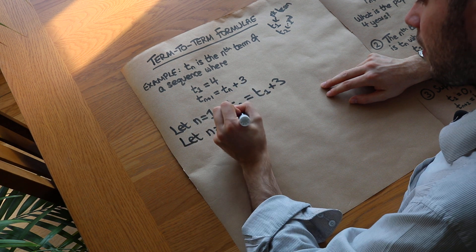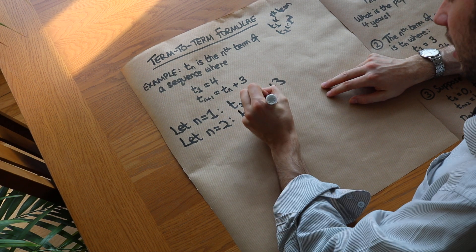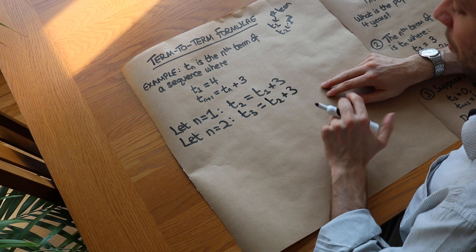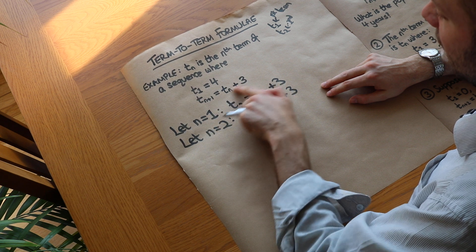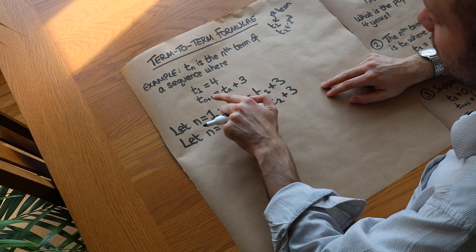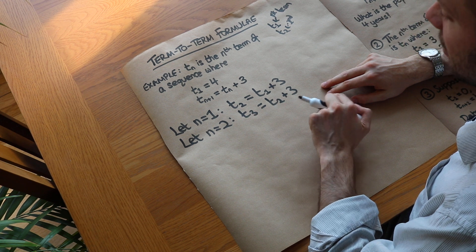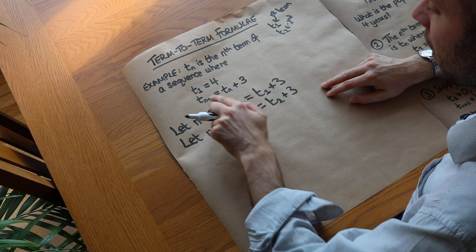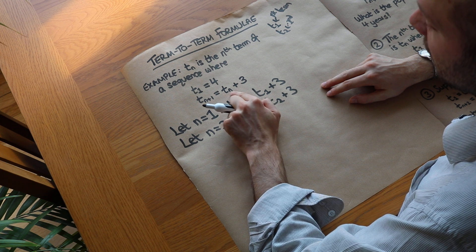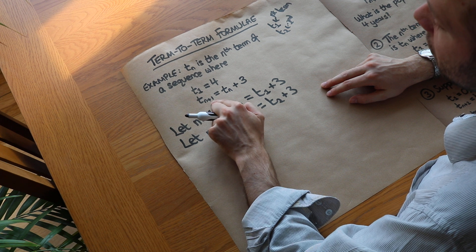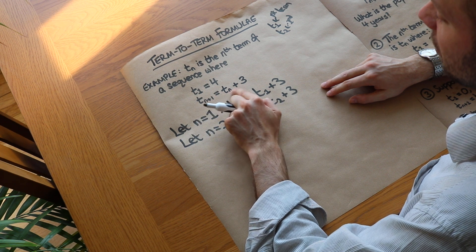If we let n equal to two, we get t3 is equal to t2 plus three — the third term of the sequence is equal to the second term plus three. In general, what this rule is saying is that we can generate the next term of the sequence by taking the previous term plus three. So the third term is the second term plus three, the fourth term is the third term plus three, and so on. The (n+1)th term is the nth term plus three.